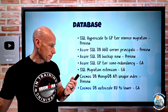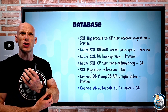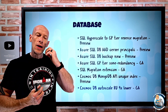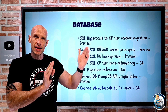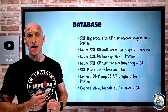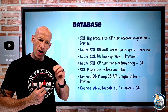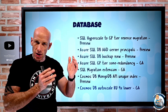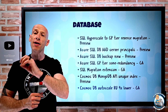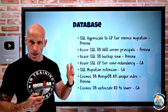Cosmos DB auto-scale request units are now four times lower. With Cosmos DB everything is based on request units — you provision a set number or use auto-scale to get what you need based on actual workload. Previously the minimum auto-scale range was 400 to 4,000 RUs, which impeded small workloads. They've now reduced that minimum range to 100 to 1,000 RUs — four times lower, meaning a lower cost of entry for leveraging auto-scale.